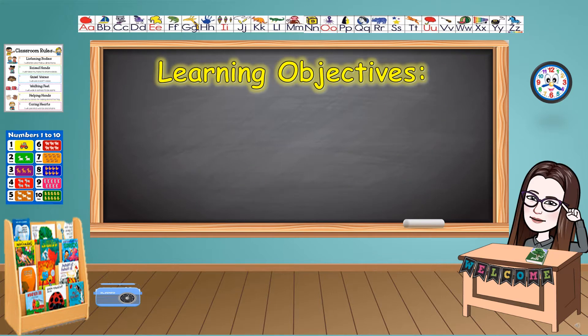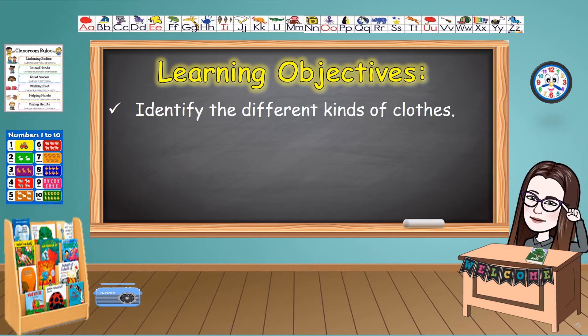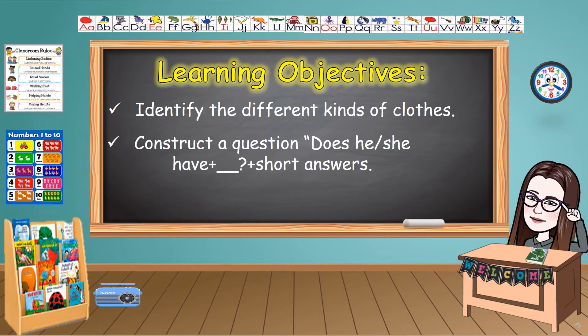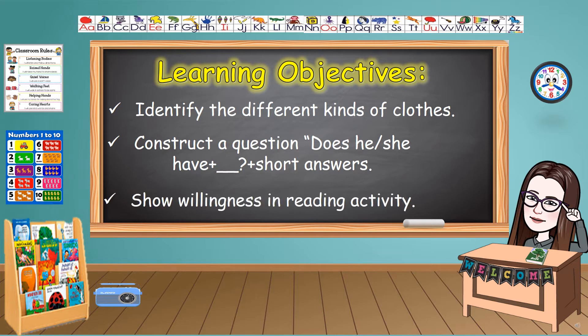At the end of this lesson, you can identify the different kinds of clothes. You can construct a question: does he or she have plus object, plus the short answers. And you can show willingness in the reading activity.